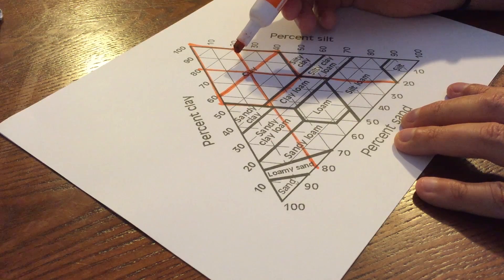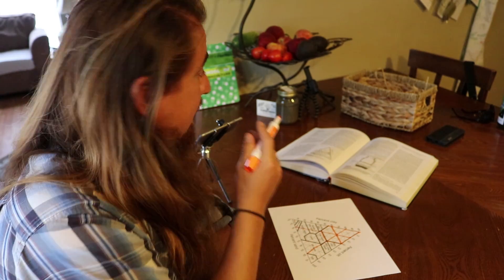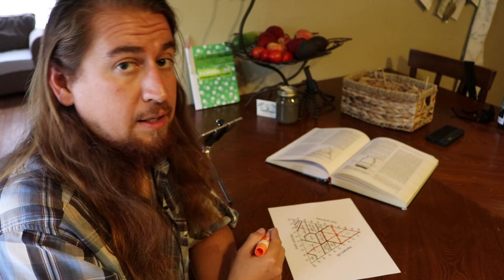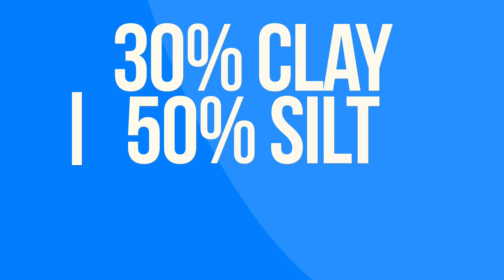It's in this whole piece of the graph here—that's clay. So we can safely say that the soil type in this mason jar test that we've done ends up being a clay soil. Let's do one more. This one is about 30% clay, 50% silt, and 20% sand.